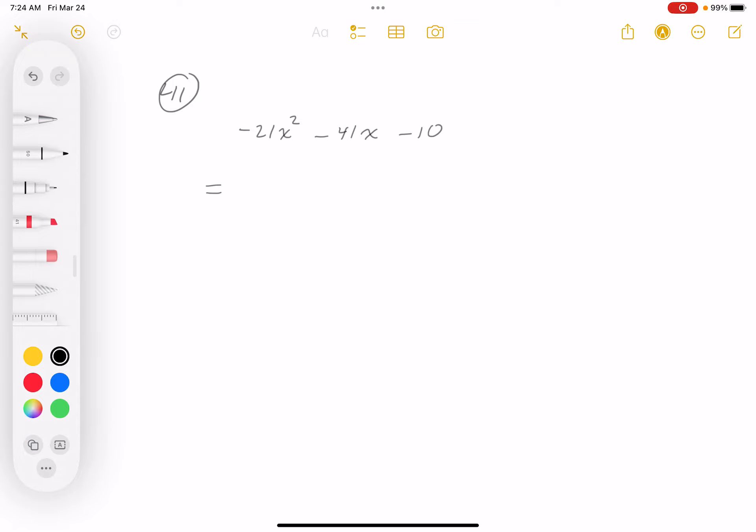What I'd recommend here is factor out the negative. I'm going to say minus 1. And we're left with 21x squared plus 41x and then plus 10.